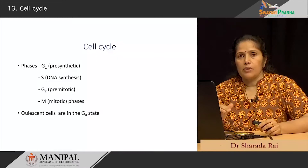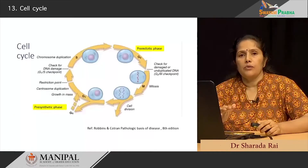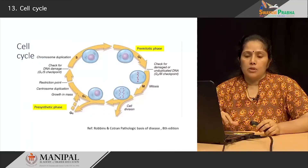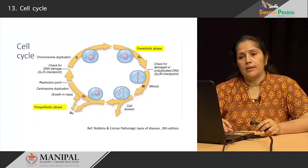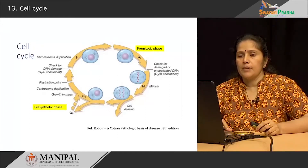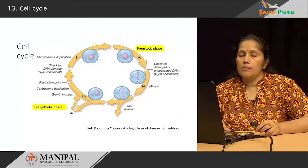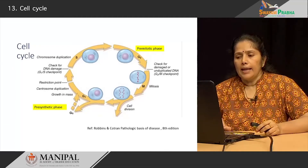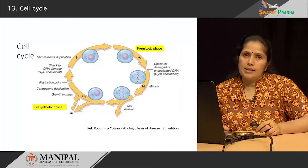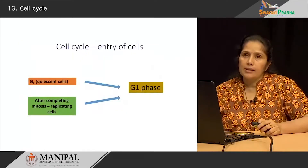You will have cells which are constantly in the cell cycle and cells which are quiet cells always in the G0 phase. Looking at the diagram showing movement of cells through the different phases: you start with the G1 phase where there is an increase in mass, followed by the S phase with chromosome duplication, then the pre-mitotic phase, then mitosis. After mitosis the cell may become quiescent or re-enter the cell cycle.